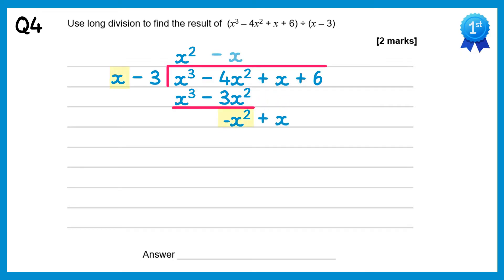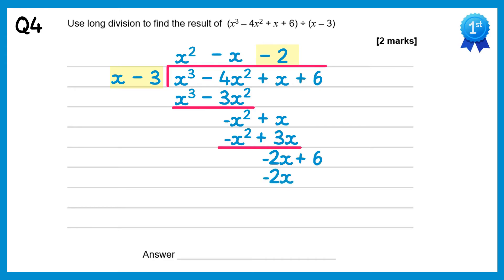Negative x squared divided by x is negative x. Multiply negative x back through: negative x times x is negative x squared, negative x times negative 3 is plus 3x. Subtract: the negative x squareds will cancel, x take away 3x is negative 2x. Then bring down the plus 6. Negative 2x divided by x is negative 2. Multiply: negative 2 times x is negative 2x, negative 2 times negative 3 is positive 6. Subtract these and you get 0. So the answer is x squared take away x take away 2.